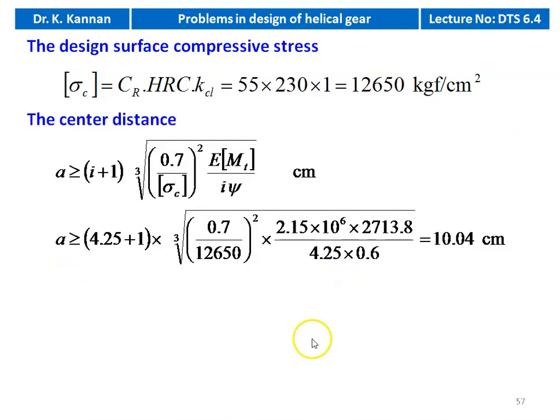We calculate the center distance for the helical gear: A ≥ (i+1) × ∛[0.7/sigma_c² × E × MT / (i × psi)]. Substituting: A ≥ (4.25+1) × ∛[(0.7/12,650²) × 2.15×10^6 × 2713.8 / (4.25 × 0.6)] = 10.04 cm.